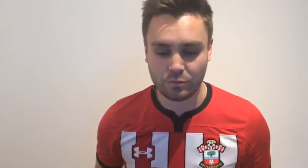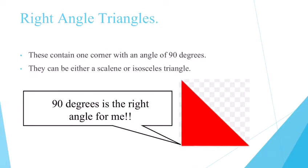So there are equilateral, isosceles, and scalene triangles. There's also one other type of triangle we're going to look at—right angle triangles. The clue is in the name because these contain one corner with an angle of exactly 90 degrees. These triangles can either be scalene or isosceles as well, but they will be referred to as right angle triangles because they have that 90-degree angle in them.